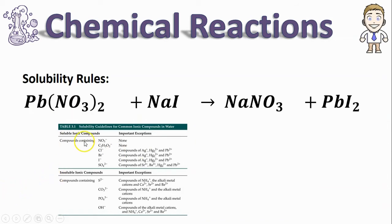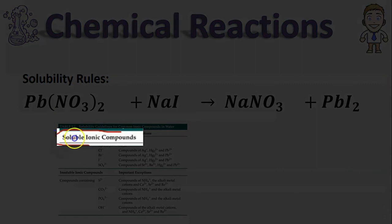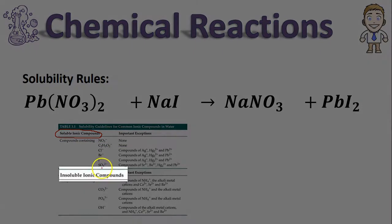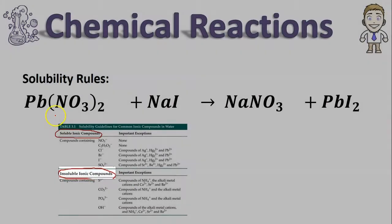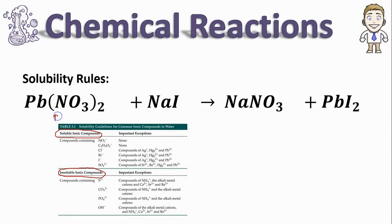We'll use these rules to try and determine for a given equation if it will be a precipitation reaction or not. So here's how the solubility rules chart works: basically it has two lists—on the top it lists soluble ionic compounds and on the bottom it lists the insoluble ones. So all you've got to do is check the substances in your equation and decide which of the two lists they fall on.